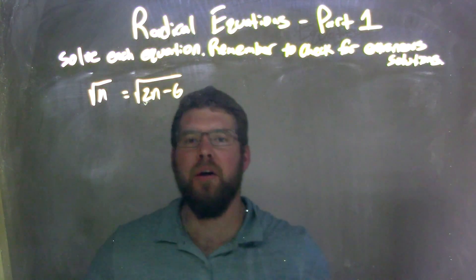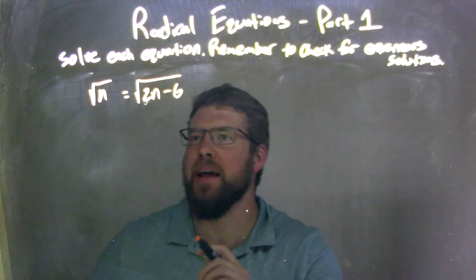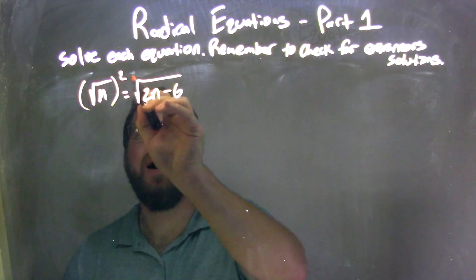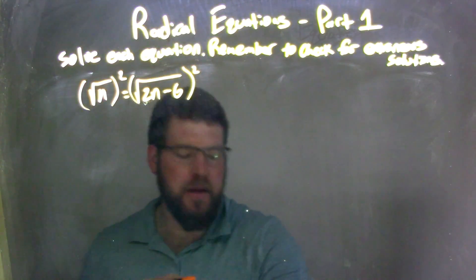Well, the square roots are on both sides of the equation, and they're already isolated, so all I have to do is square both sides, and that will eliminate the square roots.